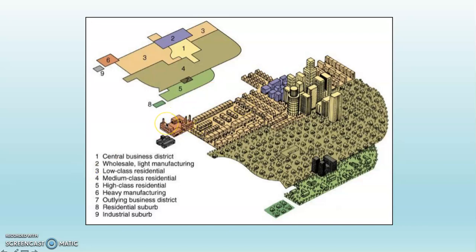You can see all the various residences and then heavy manufacturing out on the edges of the city, where property values are lower and they can get bigger chunks of land. And then outlying business districts — this reminds me a little bit of Irvine along the 405 freeway, where you have all of that business activity related to the Santa Ana airport. And then residential suburbs and an industrial suburb. So this is the original model, more complicated, with still a lot of residential area.